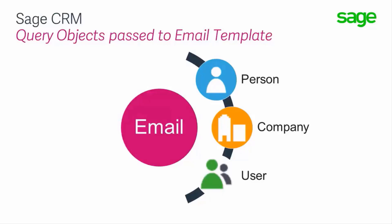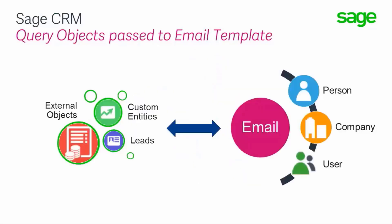An email being processed will have come from someone who may be in the system and needs to be identified by the sender's email address. The first three objects are query objects passed into the process that carry out searches using SQL: a user query, a person query, and a company query. Note that leads are not automatically scanned by the Mail Manager. The fourth object passed into the template scope is the eware object itself, which you can use for any other data searches. The eware or CRM object could be used to search the lead table or a custom entity such as a project, and through the query object could check the email address in external systems such as a Sage BMS or ERP database.